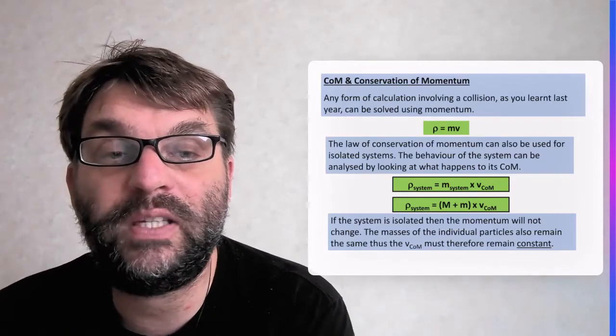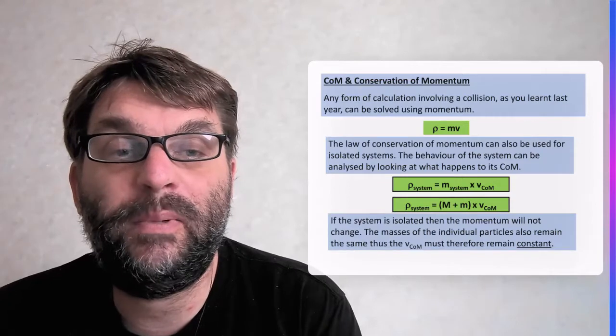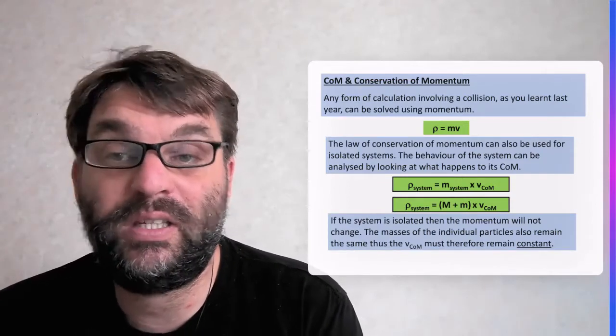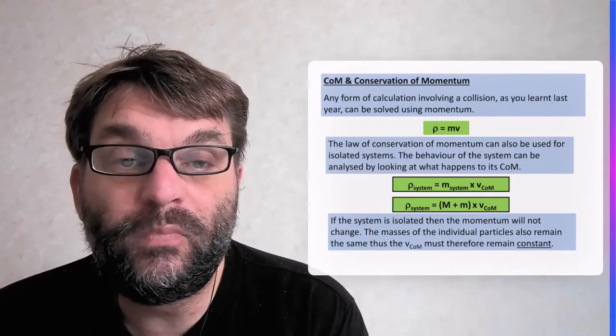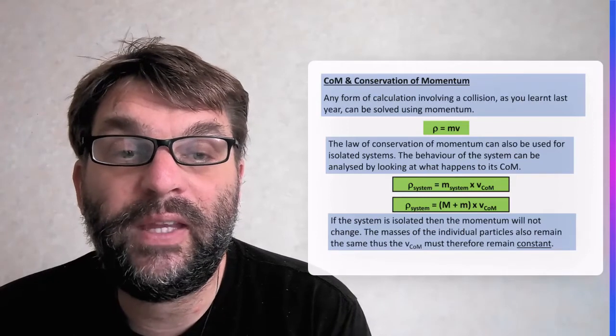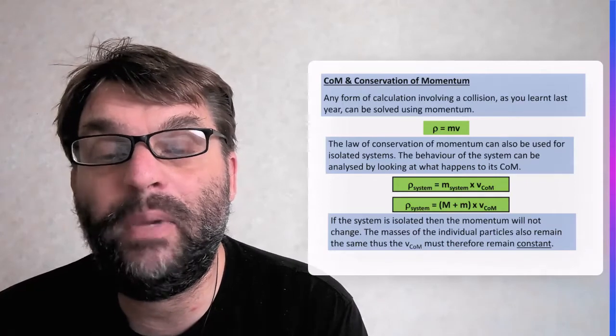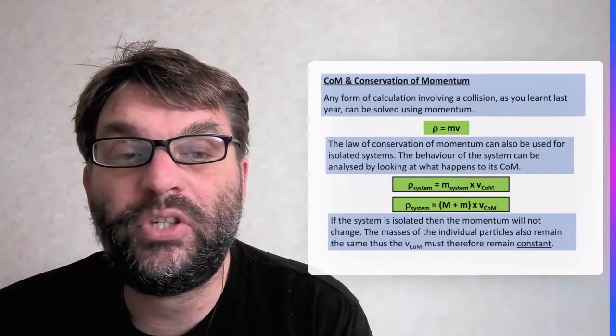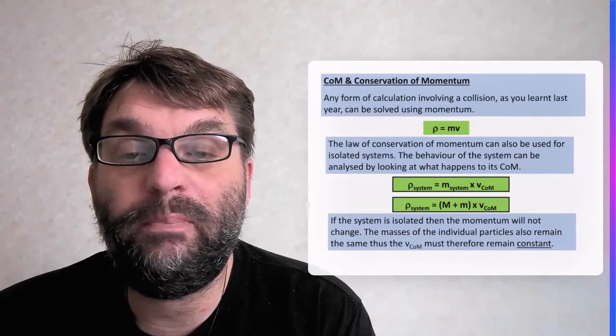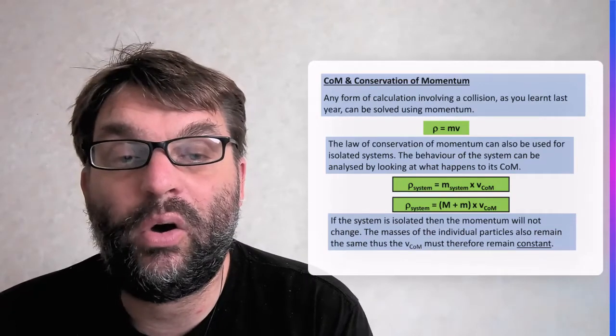The momentum of the system equals the mass of the system plus the velocity of actually the centre of mass. And therefore, if the mass of the system is going to be the total mass, so in the previous example it's going to be the big M, the big mass plus the small mass, multiplied by the velocity of that centre of mass.